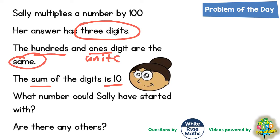This one appears to be talking about place value, because it's talking about the hundreds digit and the ones digit. So the first thing we should do is write down our column headings: hundreds, tens, units, then the decimal point, tenths, hundredths and thousandths.